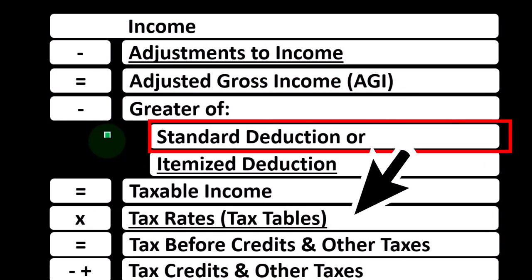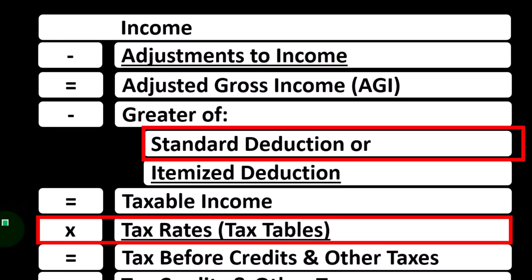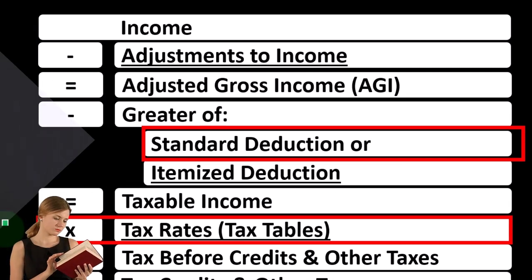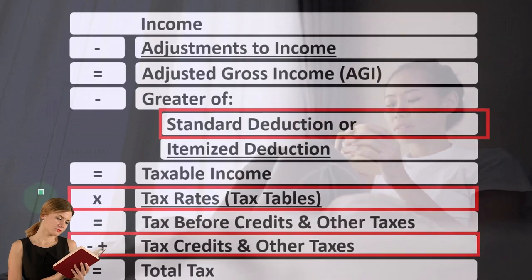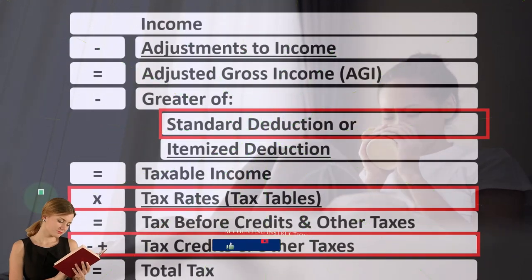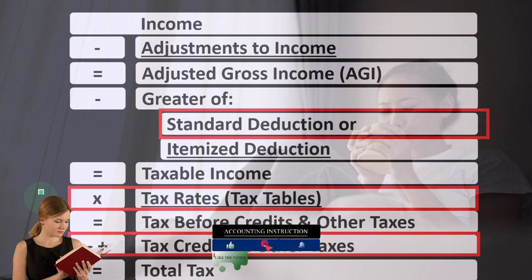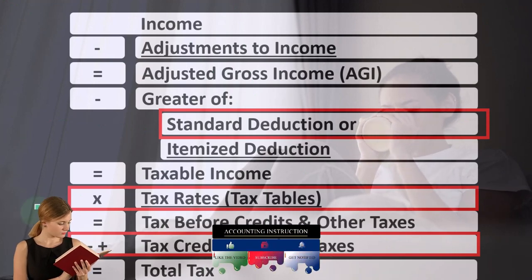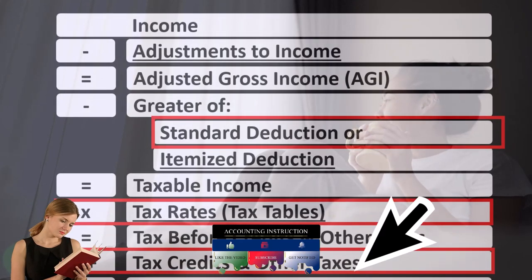There could also be a change in the tax rates because the progressive tax tables could change if there's a change in status — say, from single to head of household. But the main focus when we have a change in dependents is going to be the tax credits, and the big one that comes to mind first is the child tax credit or the other dependents credit.